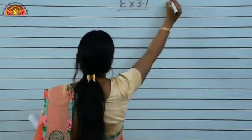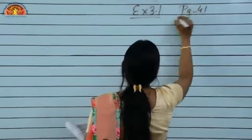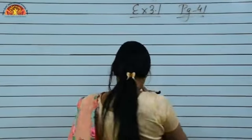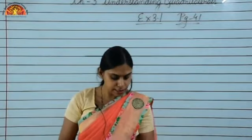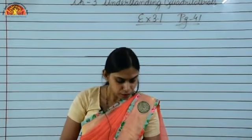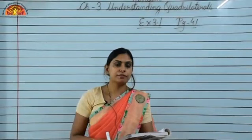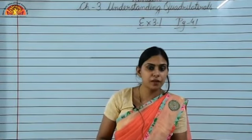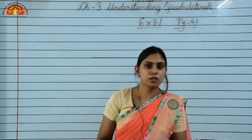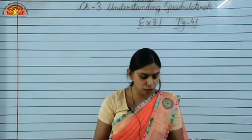Exercise 3.1, page number 41. See question number 2: How many diagonals does each of the following have? You have to give the number of diagonals in each of the polygons.